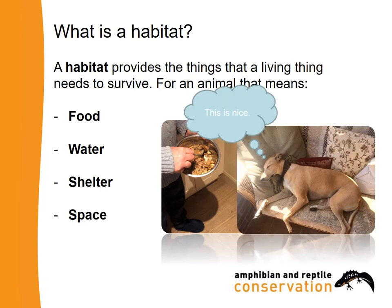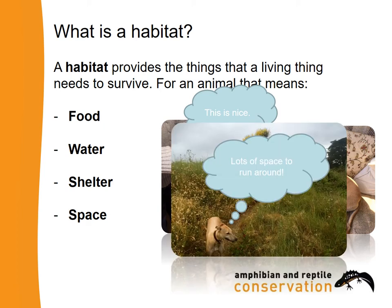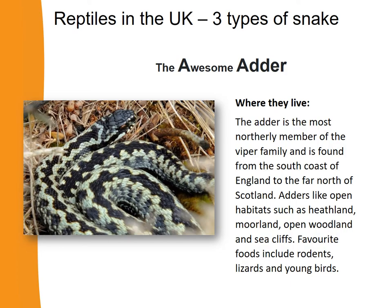A pet also has shelter from the rain by living in the house, and it has space — space to move around the house, space in your garden, or space if you take your dog on a walk. So we can use the example of pets to think about the things a habitat provides. But let's now think about wild animals, and actually let's think about reptiles.